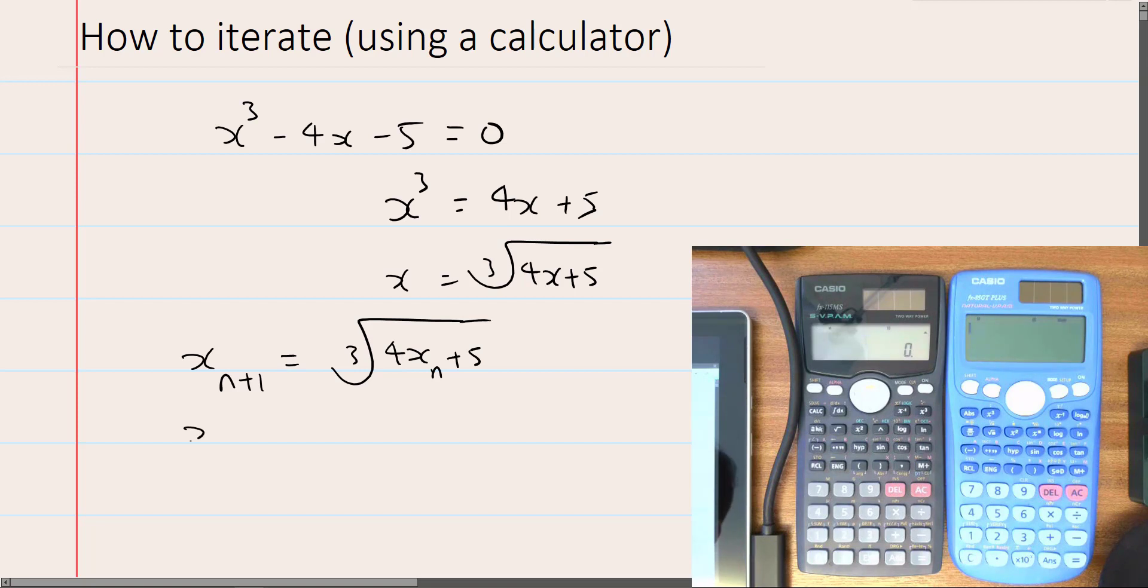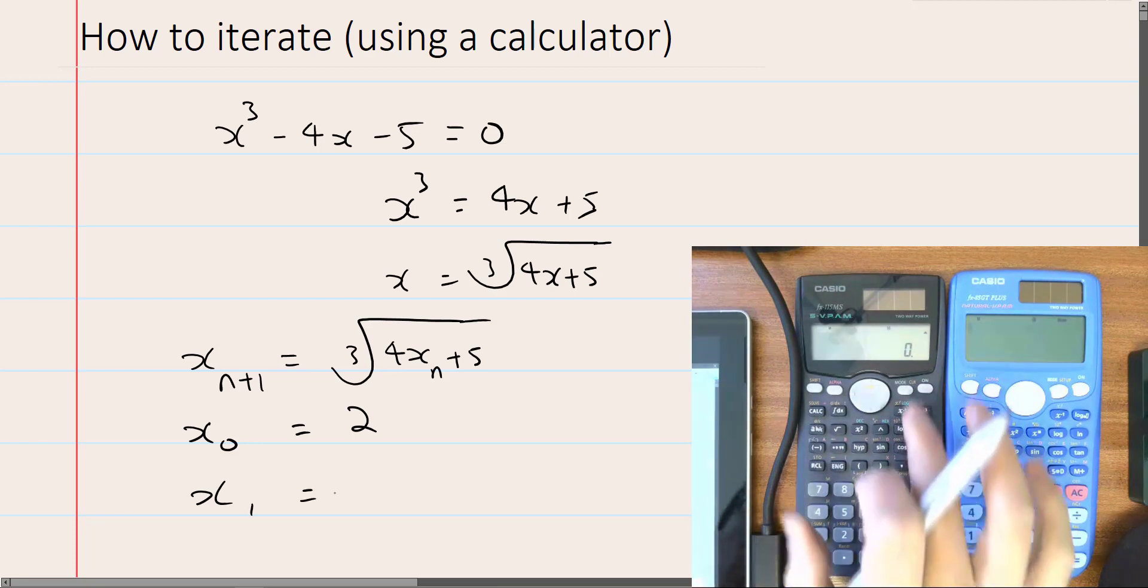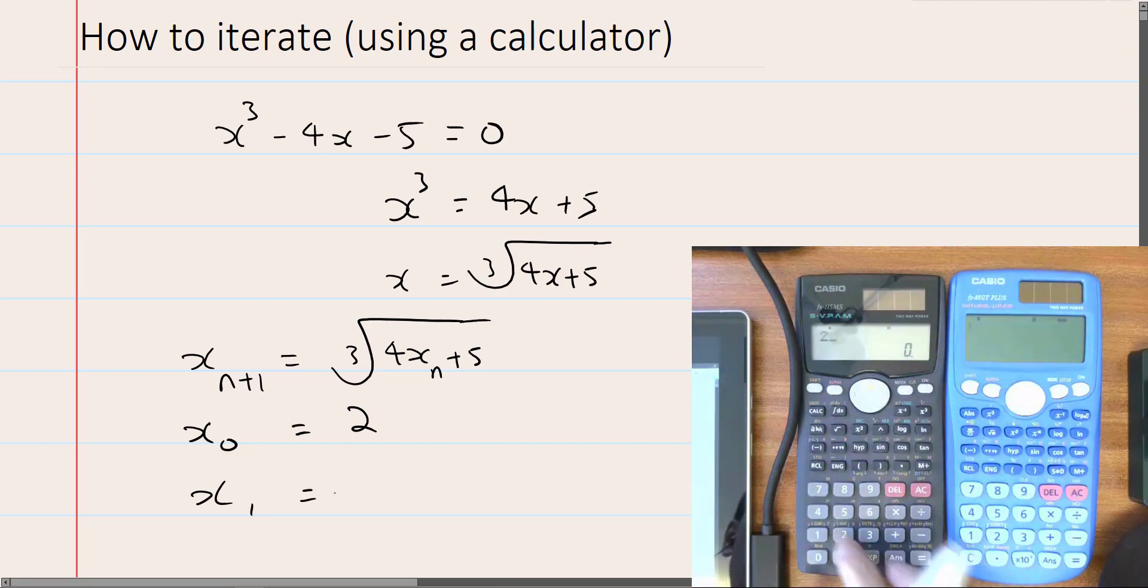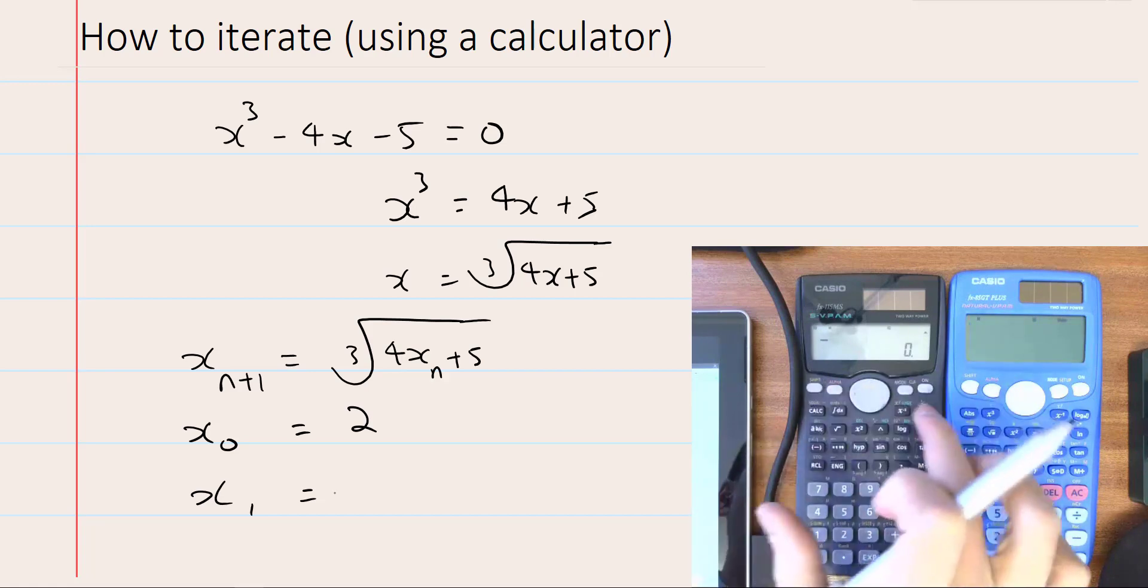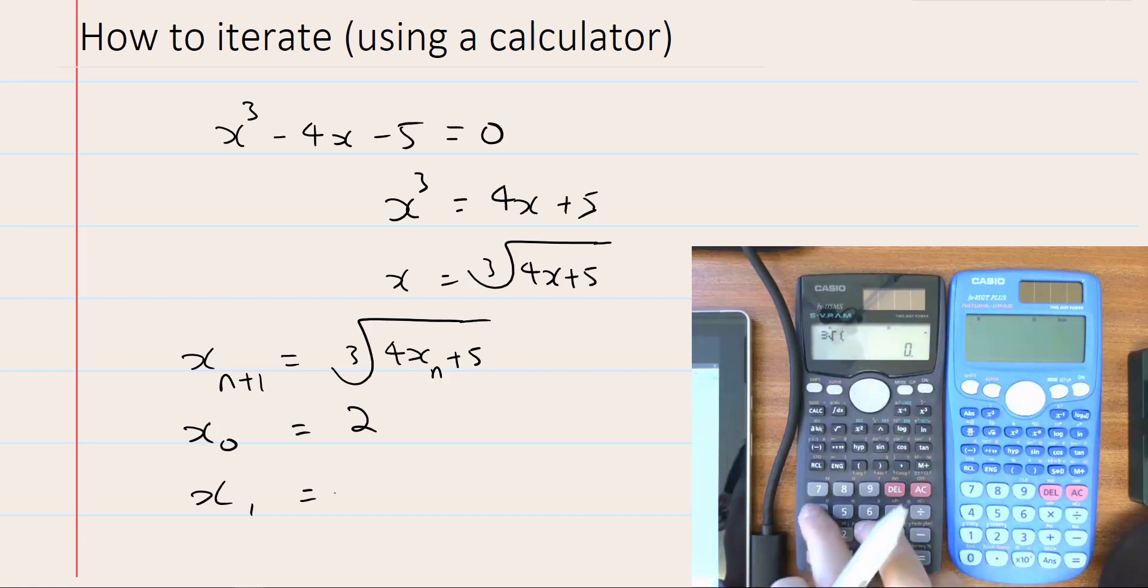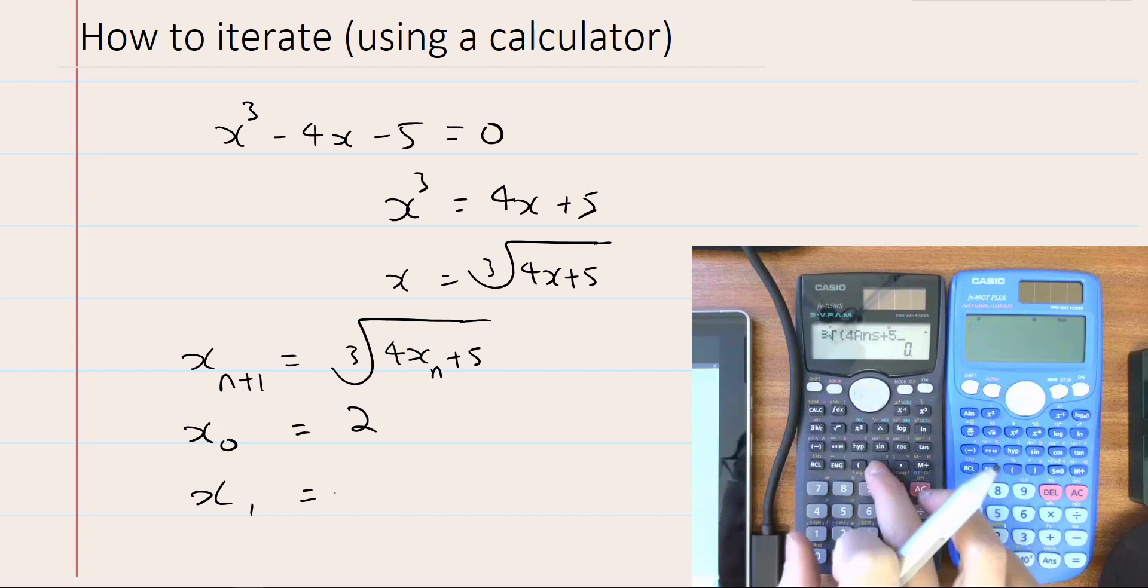Okay, so let's take x0 to be 2. And then we're going to go ahead, use a calculator. So tell the calculator x equals 2 by hitting 2 equals. Now the calculator thinks the answer is 2. Okay, so cube root 4 answer plus 5.